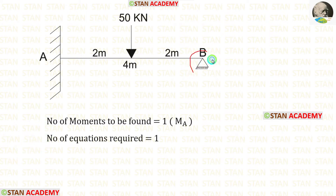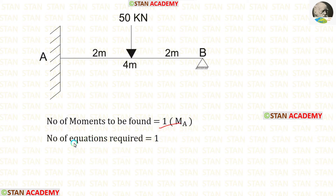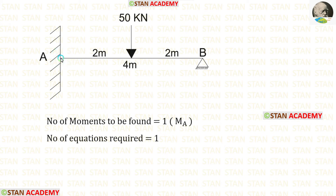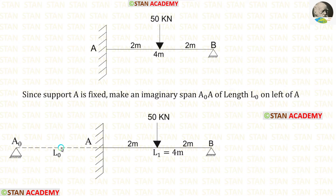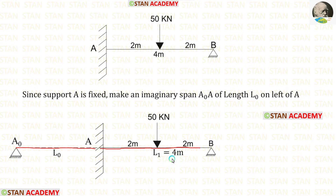We have already calculated the moment at point B, MB. So we are not going to consider the overhanging anymore. The number of moments to be found is equal to 1, that is MA. To calculate this moment, we need one equation, and using two spans we can make one equation. Since we are not considering the overhanging span, there is now only one span, so we need to make an imaginary span on the left of A. The imaginary span AA0 has a length of L0.